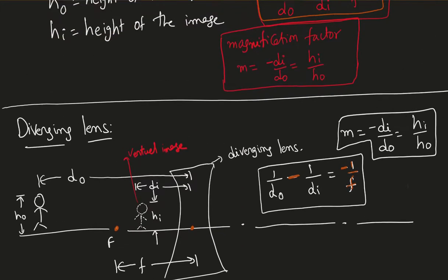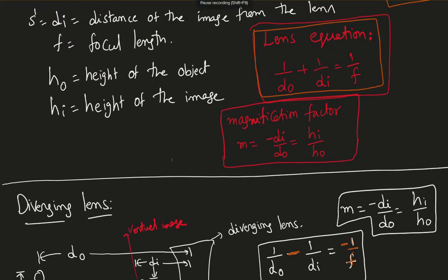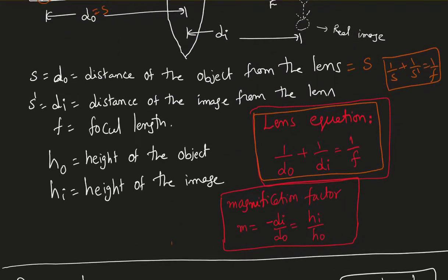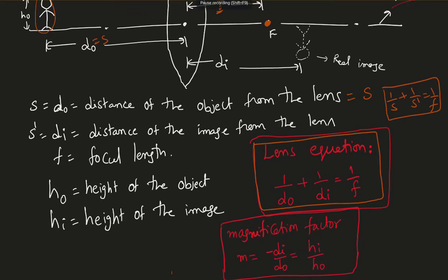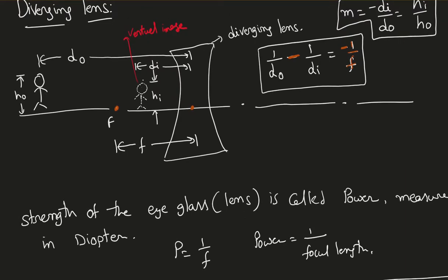The magnification factor M is the same for both lens types: M = -D_i / D_o = H_i / H_o. The negative sign indicates that the image is inverted. If the magnification factor is negative, the image is inverted; if it is positive, the image is upright — both the object and image are oriented the same way.